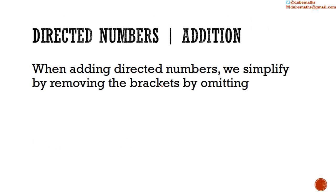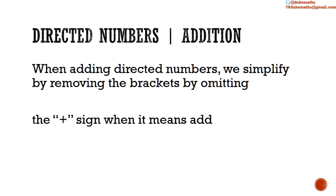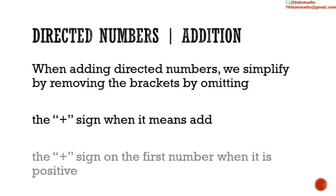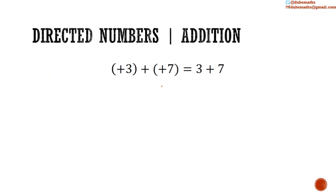When adding directed numbers, we usually simplify by removing the brackets by omitting the plus sign when it means add. We also omit the plus sign on the first number when it is positive. Thus, positive 3 added to positive 7 is written as 3 plus 7. Here we omit the plus sign that means add, and we omit the plus sign because the first number is positive.